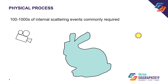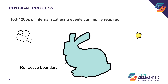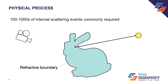Let's have a brief look at the physical process behind subsurface scattering. Here we have a schematic view of an object exhibiting subsurface scattering. We usually assume objects with subsurface scattering to be enclosed in a refractive boundary. A photon emitted by the light source can now enter the object, scatter internally, and then eventually exit and reach the camera's sensor. Photons may scatter hundreds of times before reaching the camera.